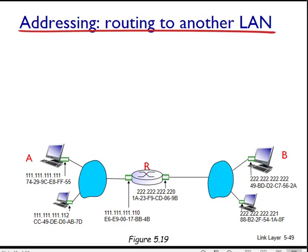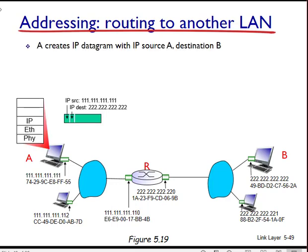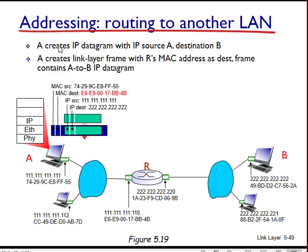Specifically, suppose that host 111.111.111.111 wants to send an IP datagram to a host 222.222.222.222. The sending host passes the datagram to its adapter, as usual. But it must also inform its adapter of the appropriate destination MAC address. Which MAC address should the adapter use? The MAC address of the port on the router or the MAC address of host 222.222.222.222?